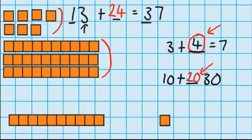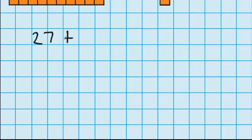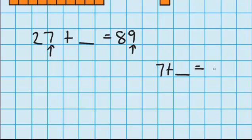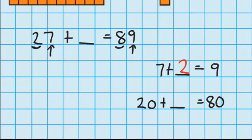Now let's try a question that doesn't involve any materials. This time we've got 27 blocks and I want to end up with 89, so I'm thinking 27 plus how much will lead me to 89? Just like in the last examples, I'm going to start with the ones. I've got 7 here and I want to end up with 9, so I'm thinking 7 plus what will equal 9? And I know that the answer is 2. Now I'm going to move over to the tens. I've got 2 tens and I want to end up with 8 tens, or 80, so I'm thinking 20 plus what will lead me to 80?